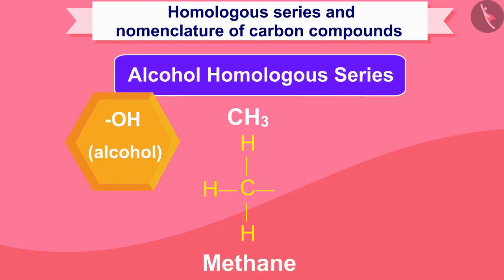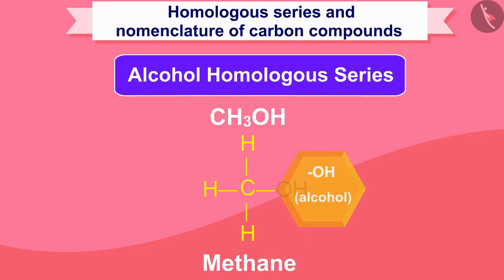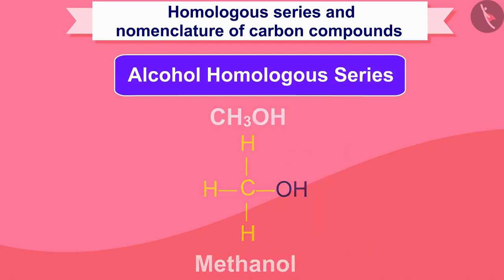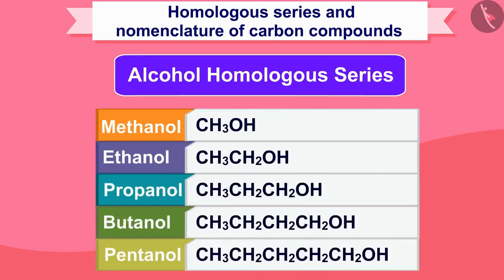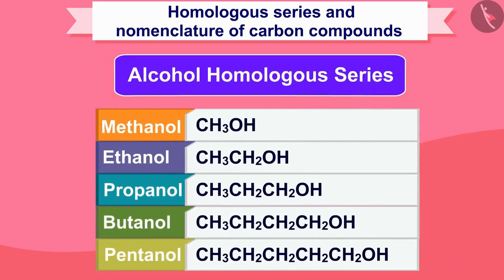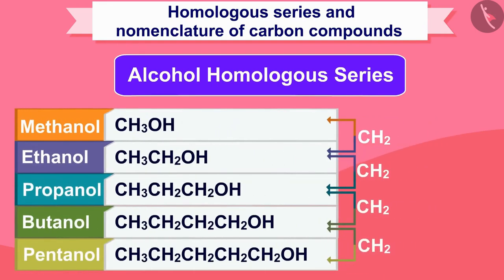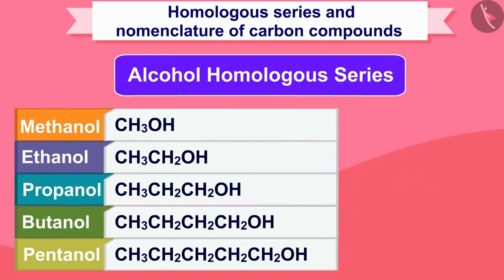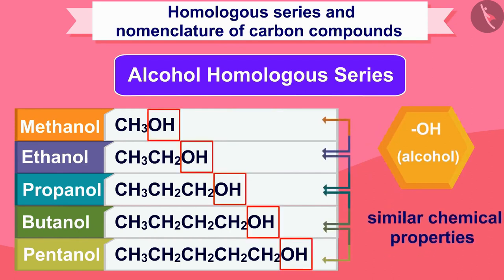If an -OH alcohol group is added instead of a hydrogen of the methane hydrocarbon, the suffix '-ol' is added to form methanol. Similarly, the entire homologous series is composed of methanol, ethanol, propanol, butanol, pentanol, etc. CH2 must be added to move from one unit to the next, changing the mass by 14. Because they all have the same functional group -OH, they all have similar chemical properties.